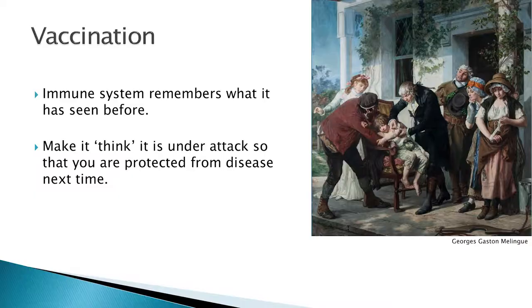Your immune system is this really complex, really clever machinery inside of you that protects you from disease-causing microbes every day — every second of every day — but it actually has a memory of its own. So when you're exposed to something and you get sick, your immune system develops a really strong, really specific response to that organism causing you disease, and it remembers that. So next time you see it again, it's primed, it's ready to go — you won't even know that you've gotten sick with that same organism.